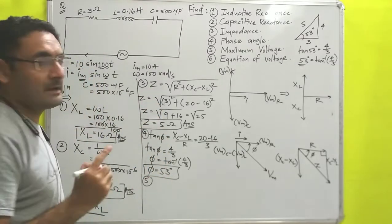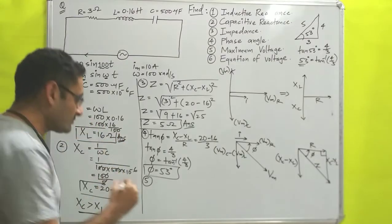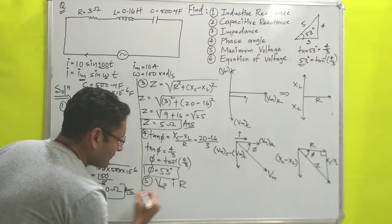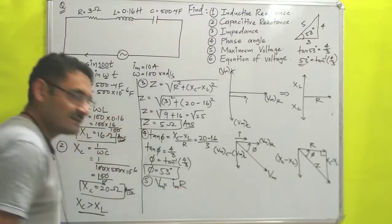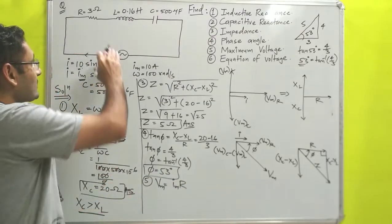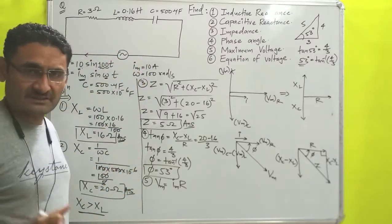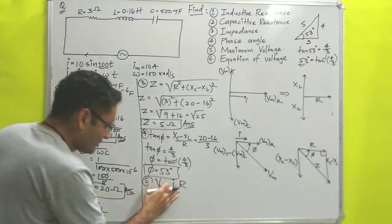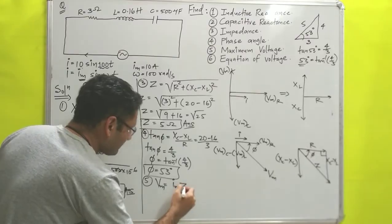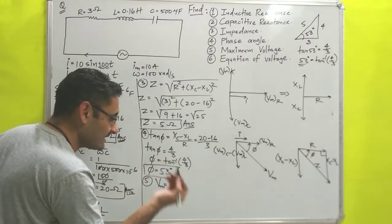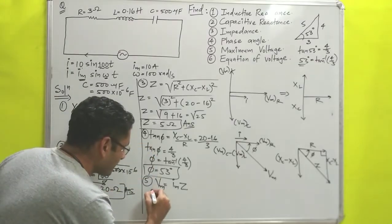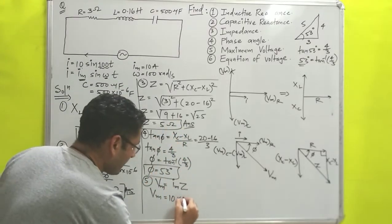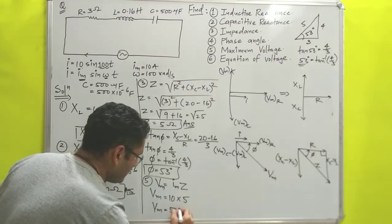Fifth, we find maximum voltage. Applying Ohm's law: Vm = Im × Z. Since the circuit has multiple devices with different resistances, we use impedance Z instead of R. So Vm = 10 × 5 = 50 volt. That is answer number 5.